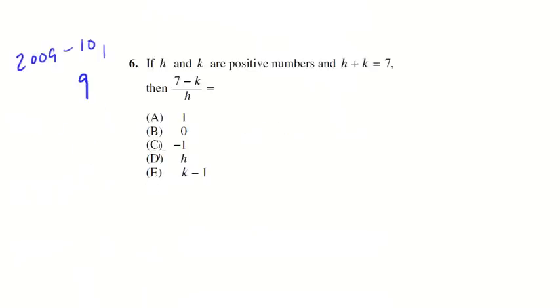A little harder one. If h and k are positive numbers, and h plus k equals 7, then 7 minus k over h equals... So we look at this one, and unlike the last ones, there's no h plus k in here. We have 7 minus k over h, and we're like, well what do we do? I don't have an h, I don't have a k, I don't have anything. Well, let's see what happens. Let's take this guy, and let's modify him so we can make a substitution into here.